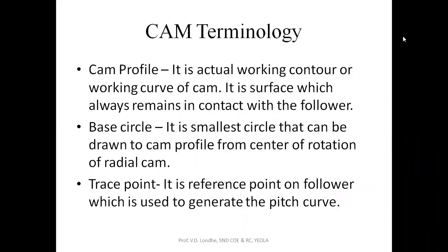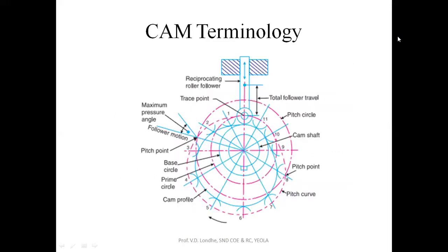The first definition is the CAM profile. The CAM profile is the actual working profile or contour which is drawn along the follower — it is the surface where the follower remains in contact with the cam. Here, this is the roller follower, and whatever profile this blue line represents is nothing but the CAM profile. With the help of this curve, we can draw the CAM profile.